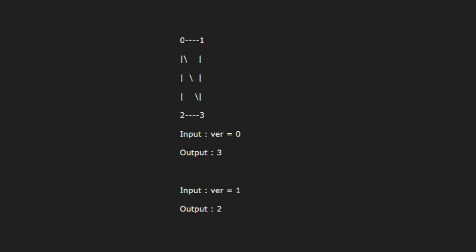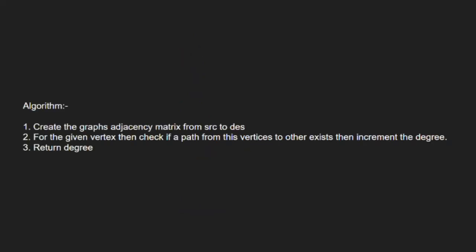Now, let us see the approach. First, we create the graph adjacency matrix from source to destination. Then, for the given vertex, we check if a path from this vertex to other exists. If it exists, then we increment the degree. Finally, we return degree.